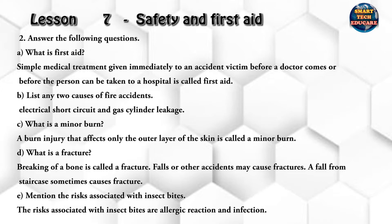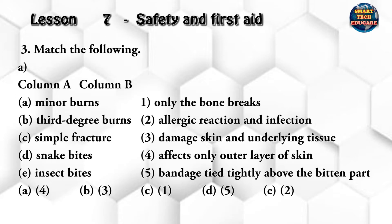Mention the risks associated with insect bites. The risks associated with insect bites are allergic reaction and infection. Match the following: minor burns — affects only the outer layer of skin; third degree burns — damage skin and underlying tissue; simple fracture — only the bone breaks; snake bites — bandage tied tightly above the bitten part; insect bites — allergic reaction and infection.